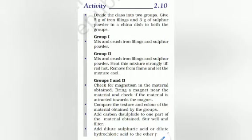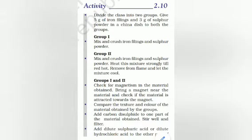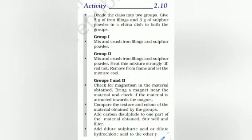Let's do an activity. Divide the class into two groups. Give five grams of iron filings and three grams of sulfur powder in a china dish to both groups. Group one will mix and crush the iron filings and sulfur powder. Group two will also mix and crush them, then heat the mixture strongly until red hot, remove from the flame and let it cool.